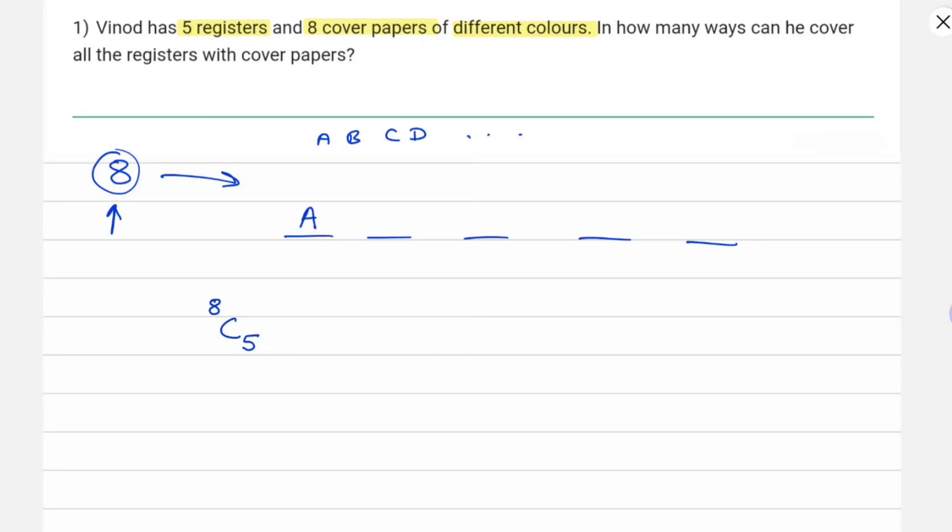So if the first one has A cover, second one has C cover, third one has B cover, then they can also shuffle - like this could have C and this could have A, right? So we can also shuffle them.